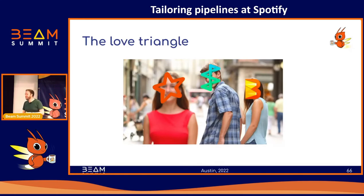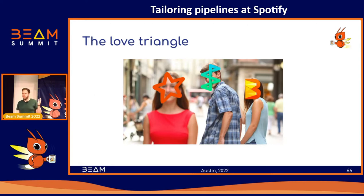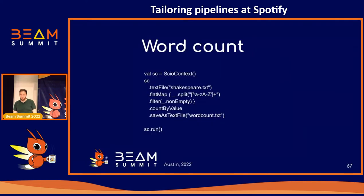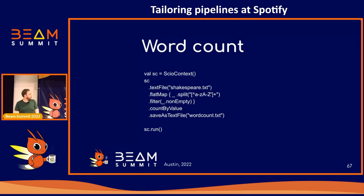Here's my favorite slide. If you haven't seen Scio before, it looks very similar to the Scala RDD API, but it's using Beam — the best of two worlds. A big benefit is that a lot of developers joining us are familiar with Spark, so they can jump in and be productive quite quickly. Here's an example of what a word count job looks like in Scio. You have a Scio context, very similar to the Spark context. From that, we access IOs — in this case, we read a text file. We perform functional transformations like flat map or filter, count that up, and then save it as a text file. With the Scio context run, you assemble your DAG and run your job.